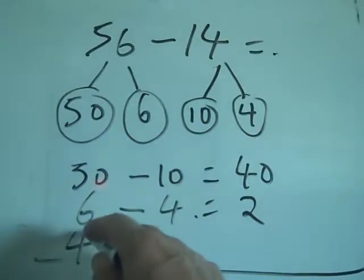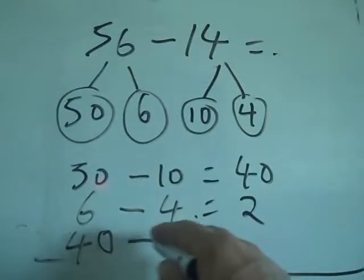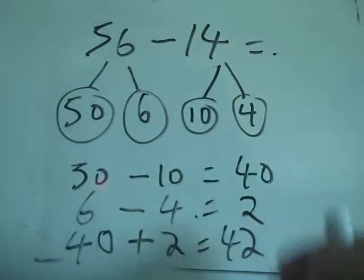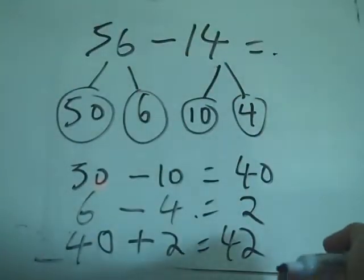And then I add what I've got back together, 40, plus 2 is 42, which is the answer. So 56 minus 14 is 42.